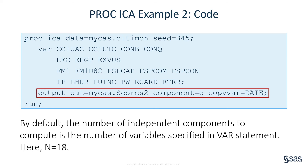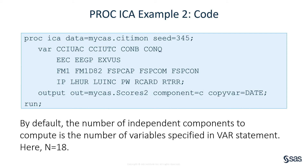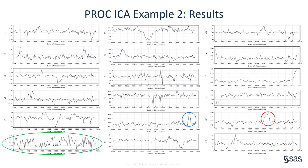The output statement stores the computed independent components in the output data table named scores2, and names the components c1 through c18. The copy var equal option transfers the date variable from the input data table to the output data table. Now, let's look at the plots of the computed independent components c1 through c18. The 18 plots are generated by using the scores2 output data table and PROC SGrender. In each plot, the horizontal axis displays the date of observation, and the vertical axis displays the value of a computed independent component.